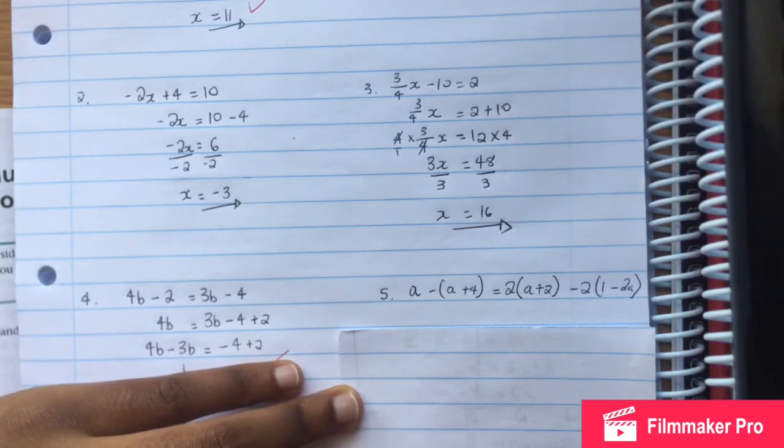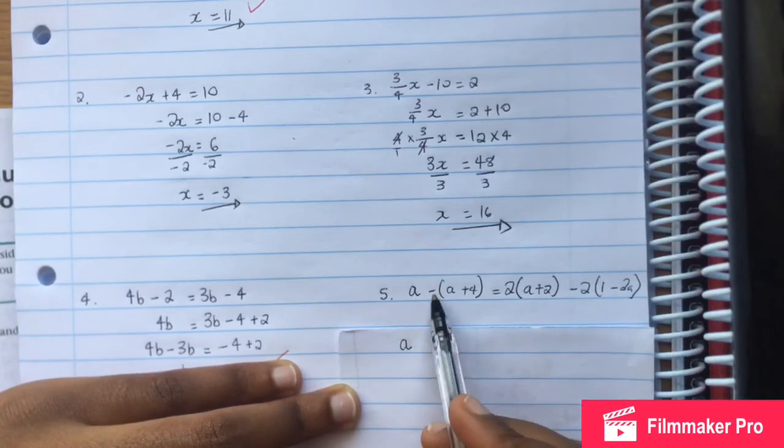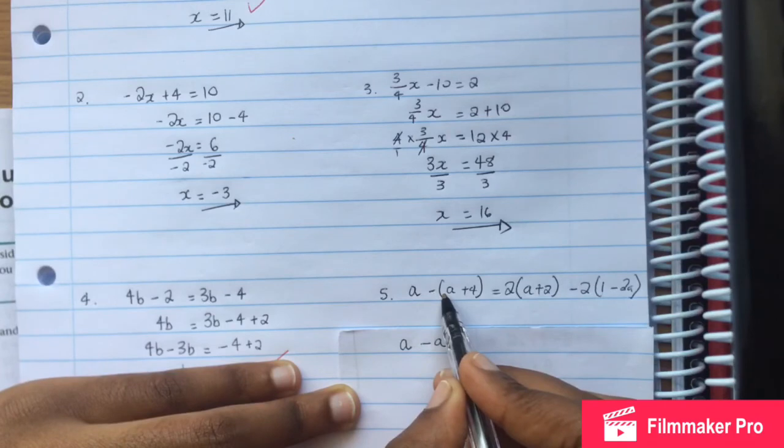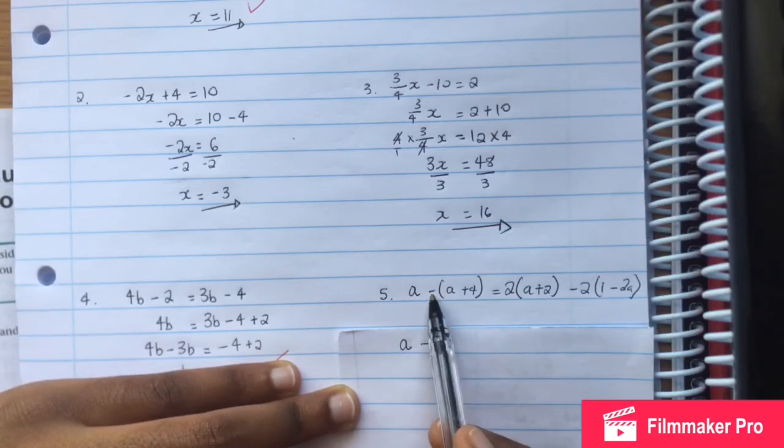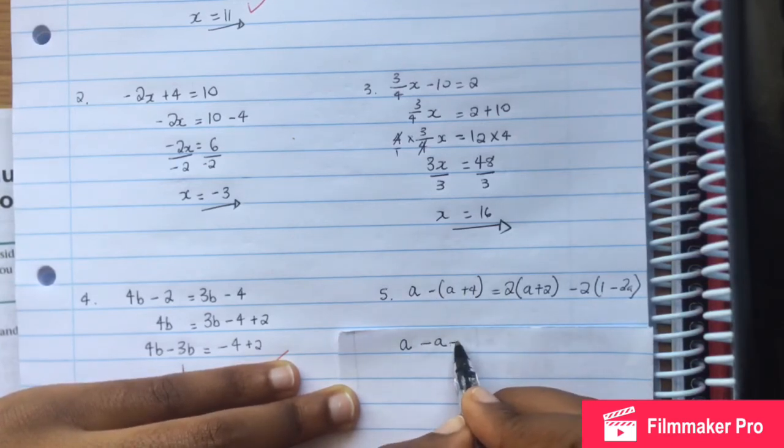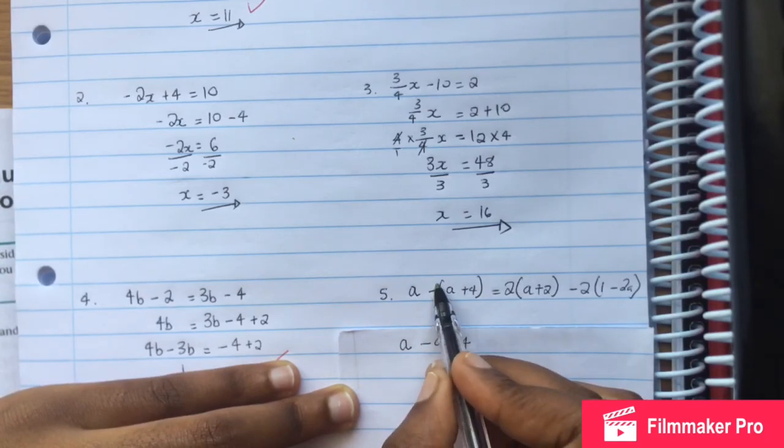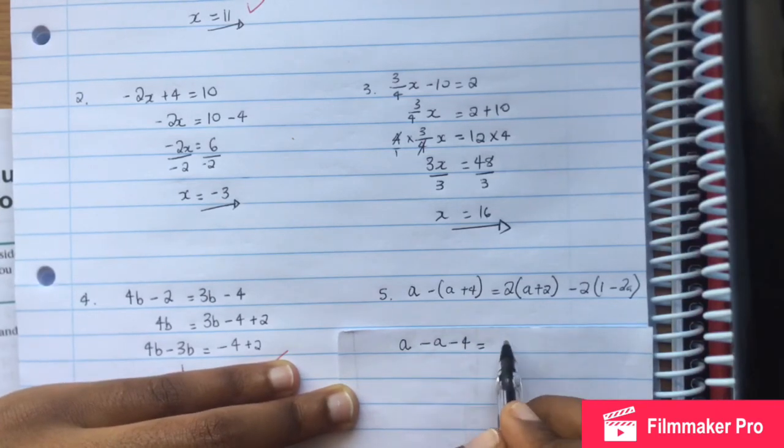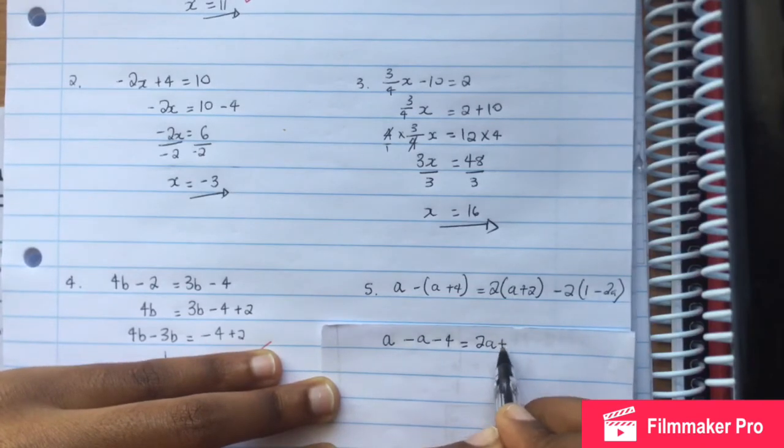So we have negative times a. Negative times positive a is negative a. Because there is a negative and it's multiplying the positive. Negative times negative times positive equals negative. And then one times a is a. Negative times positive is negative. And then one times four is four.